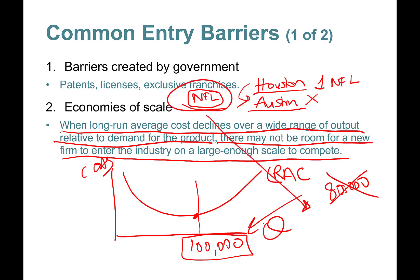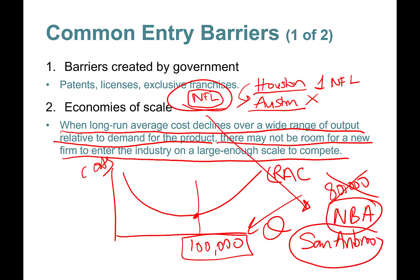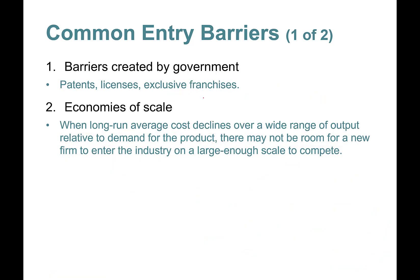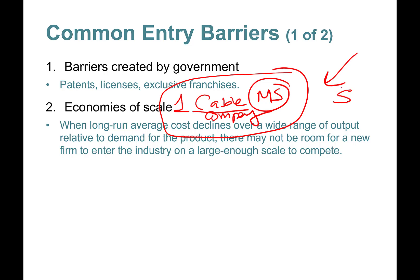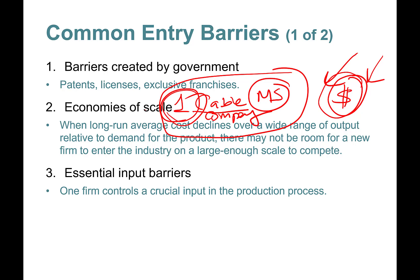That's why NFL teams go to big cities like Houston with millions of people. The NBA's San Antonio Spurs are in San Antonio, but there's no second NBA team there — the city simply isn't big enough. The same idea applies to cable service: in Hattiesburg, Mississippi, a college town, there was only one cable company because the infrastructure investment only justified one provider.